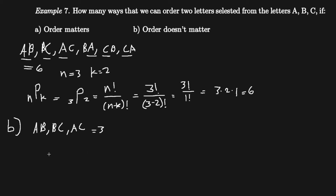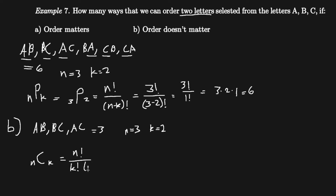This is called a combination, denoted as n C k. Here n equals 3 and k equals 2 — three letters to choose from, selecting two letters at a time. The formula is given by n factorial over k factorial times (n minus k) factorial.